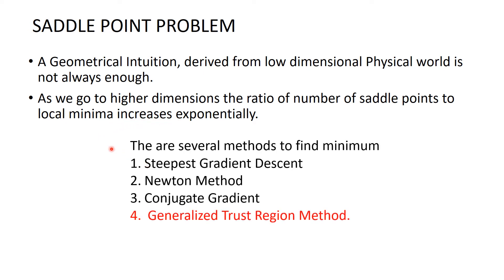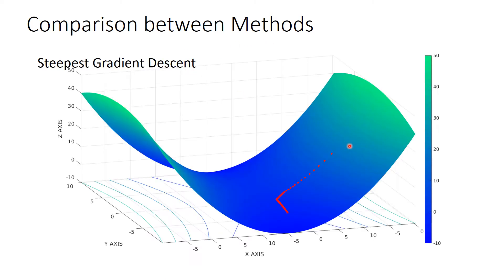There are several methods to find minimum. We will focus on generalized trust region method. Comparison between methods. First, steepest gradient descent method. As we can see from the graph, the function reaches to minima but it takes lot of iterations.